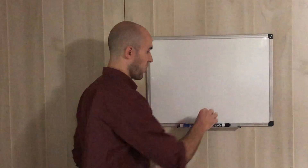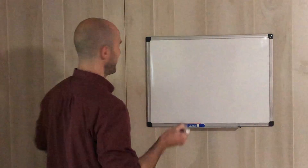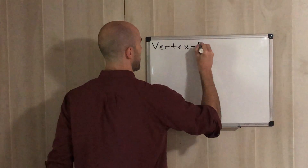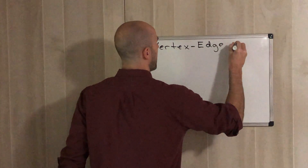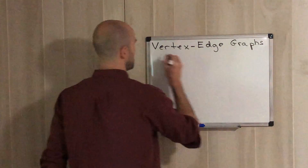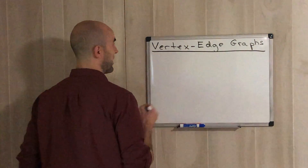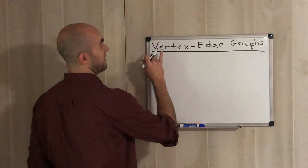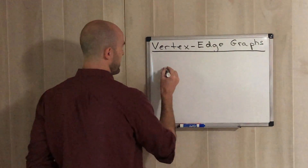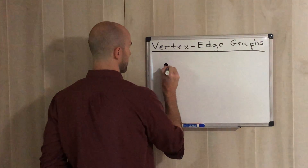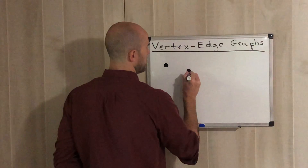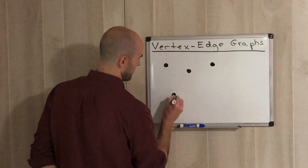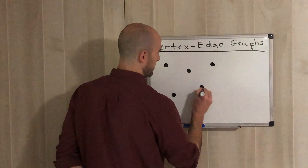Good morning guys. Today we're going to start working with vertex edge graphs. It's most likely something you've never seen, but you should understand the words behind the name. It may look odd at first, but it isn't difficult. A vertex edge graph is a graph that consists of vertices and a bunch of edges. The vertices are just a bunch of points.